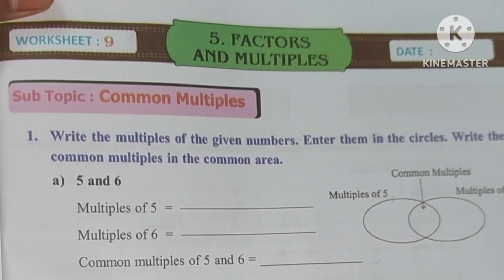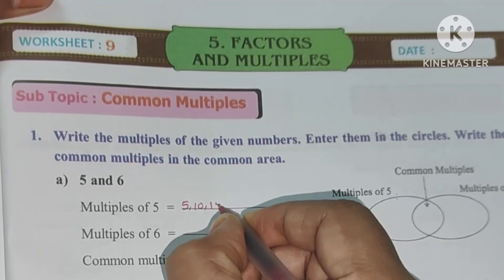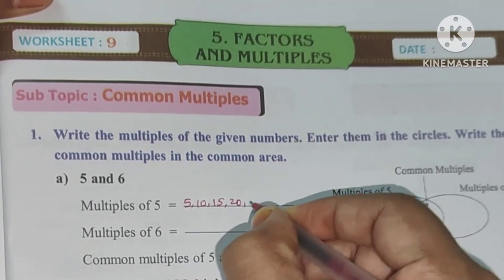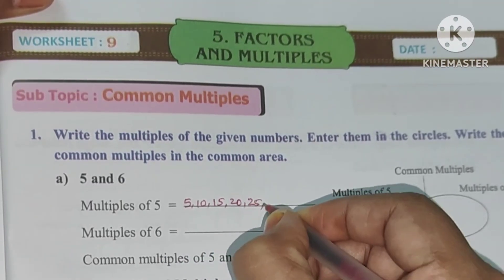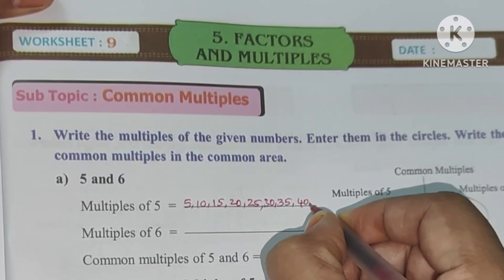5×1 is 5, 5×2 is 10, 5×3 is 15, 5×4 is 20, 5×5 is 25, 5×6 is 30, 5×7 is 35, 5×8 is 40, 5×9 is 45, 5×10 is 50.